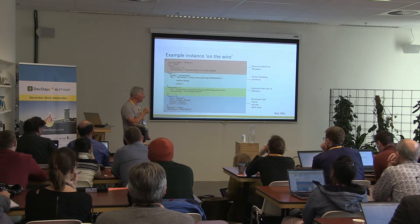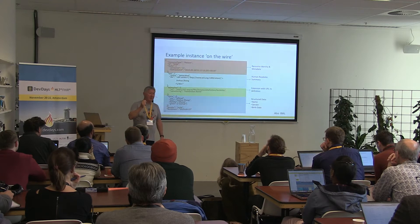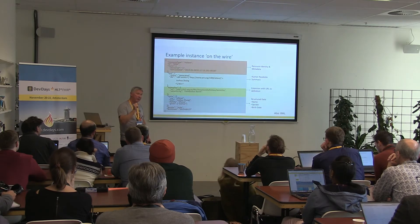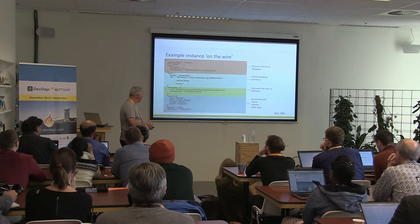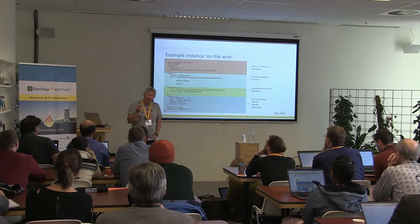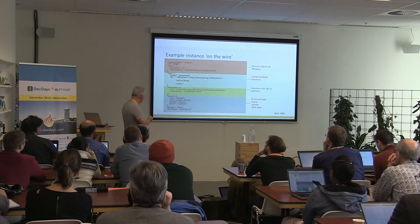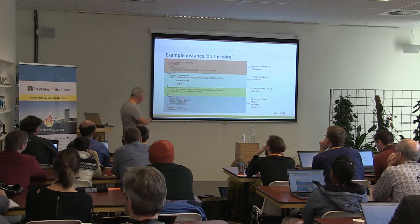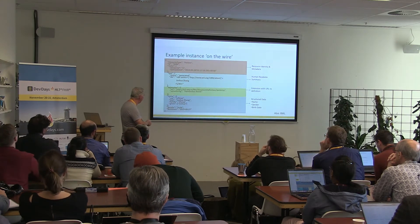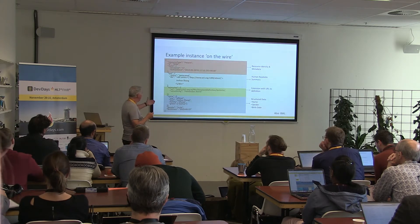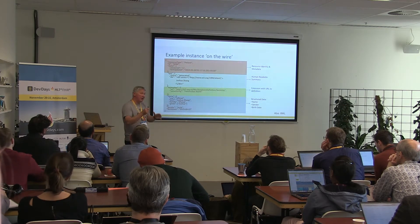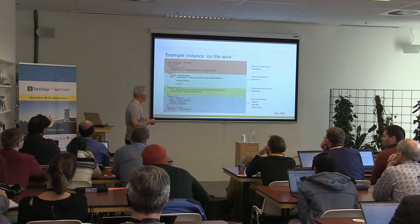There are open source tools to convert any XML to any JSON and vice versa — don't use those. Use tooling provided by the FHIR project to convert between XML and JSON. The reason is that when you have an element defined as multiple in FHIR, it will always be an array. When there's just one name, it's in an array of one; an ordinary XML converter will convert that into a single element, so just watch out for that.